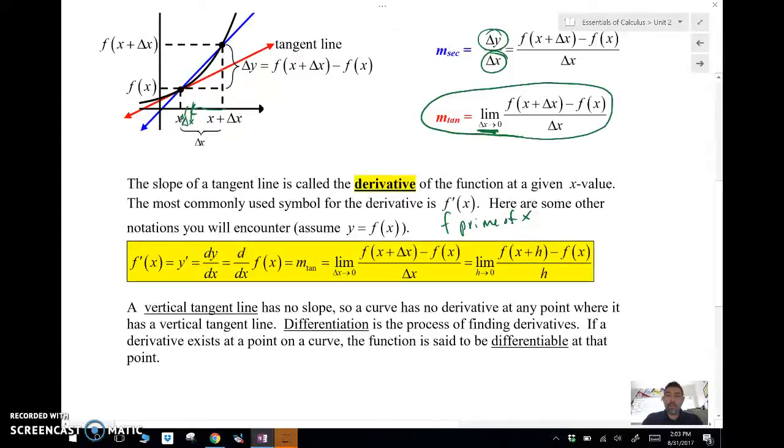OK, some other notations that we might find. So we see f prime of X. We see Y prime. We see dy/dx. It's called a differential. d/dx of some sort of thing. That's also a differential. That's the derivative of f of X. We might see M tan. That's the derivative or the slope of the tangent line. We're going to see this limit. So we want to see that limit. We might just see that.